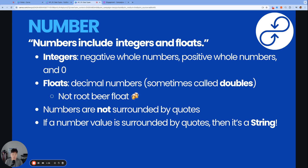The next data type is a number — simply a number. Breaking it down further, there are integers, which are zero, positive, and negative whole numbers, and there are floats, which are decimals. You may have also heard floats called doubles. And to clarify, this is a different type of float than a root beer float. The biggest thing to note is that number data types are not surrounded by quotes. As soon as a variable is surrounded by quotes, even if the value itself is clearly a number, the variable becomes a string — so make sure not to surround it in quotes.